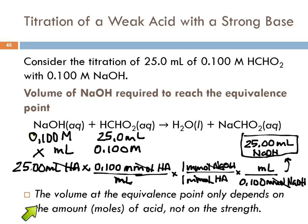This is a good thing to note: the volume at the equivalence point only depends on the amount of acid — the moles of acid. It does not depend on the strength of the acid. This is the same calculation we did for a strong acid. The equivalence point is where you have added the number of moles of base equivalent to the moles of acid. It doesn't matter what kind of acid or base it is.